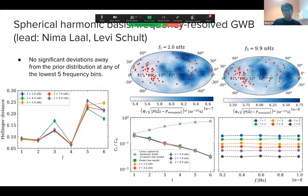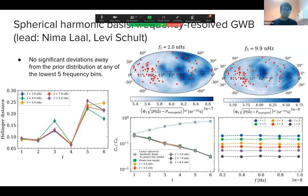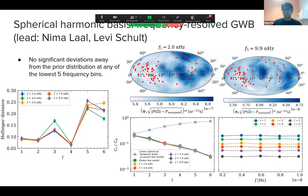All results so far used a power law template, but if the background comes from supermassive black hole binaries, every frequency will have a different anisotropic signature because different SMBHB systems contribute to different frequency bins. We therefore performed a frequency-resolved GWB anisotropy analysis. The results show no significant deviations from the prior when using the square root spherical harmonic basis, as quantified through the Hellinger distance, and we set upper limits at each frequency for different spherical harmonic multipoles.